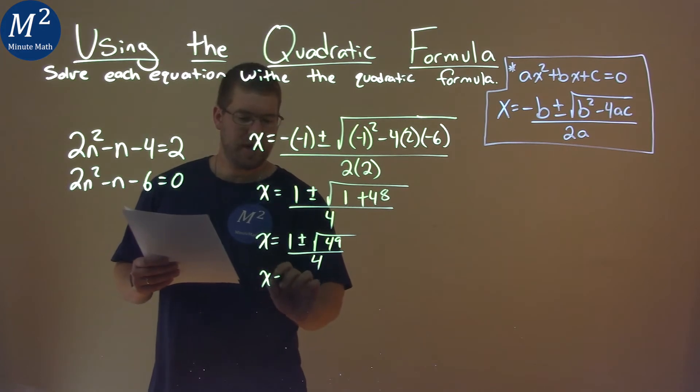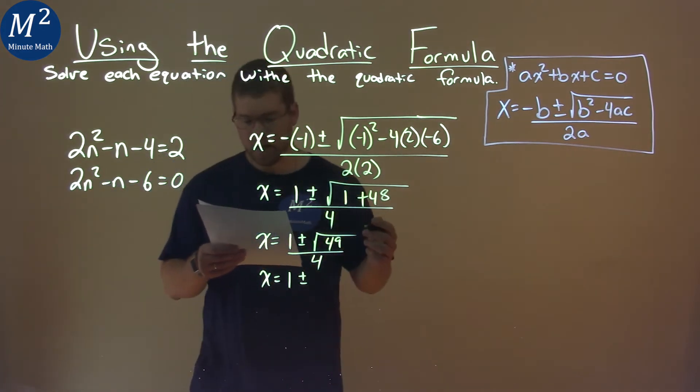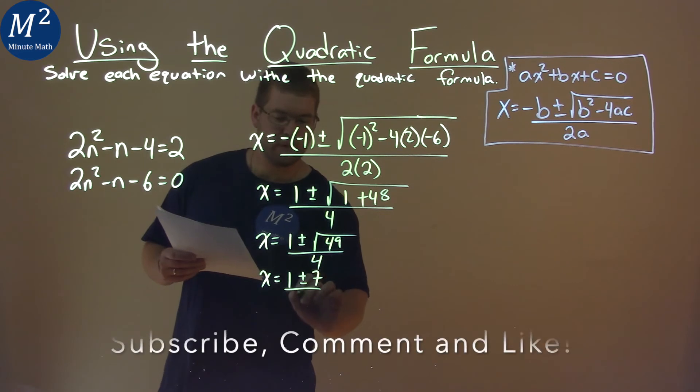Continue. x equals 1 plus or minus 7 over 4, since the square root of 49 is 7.